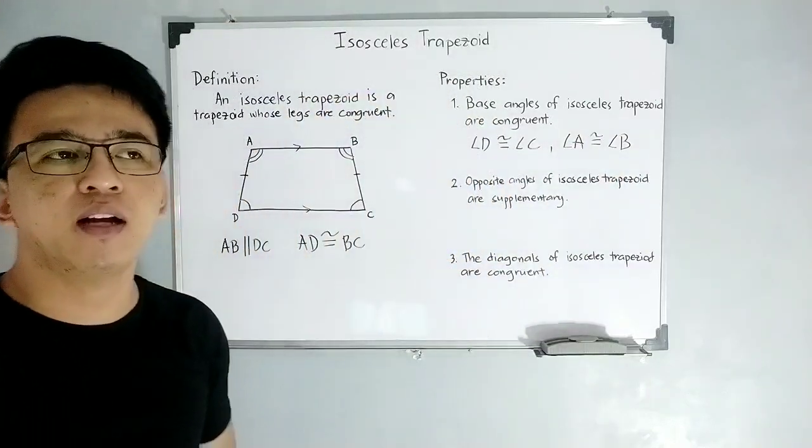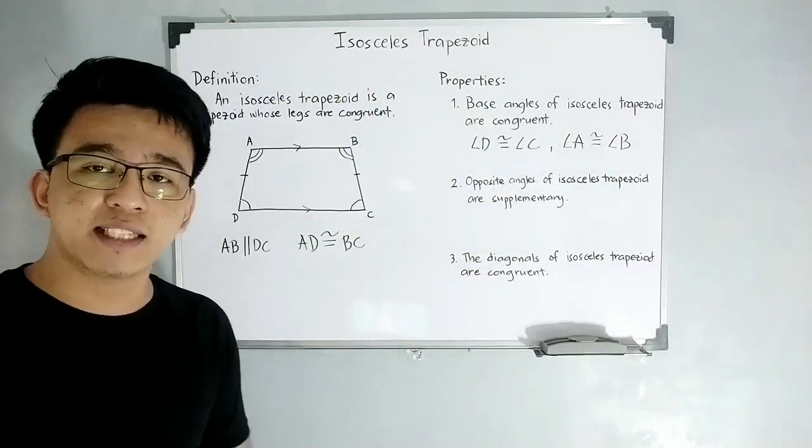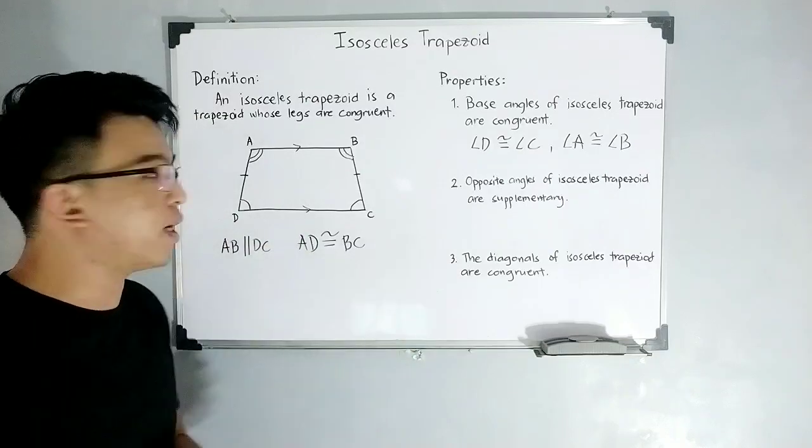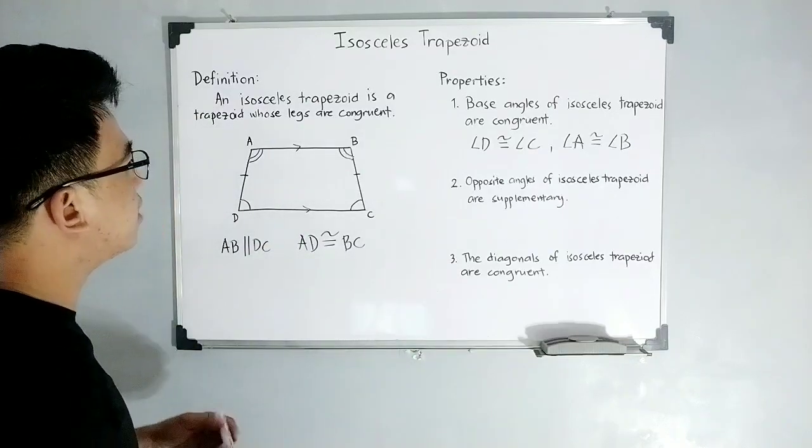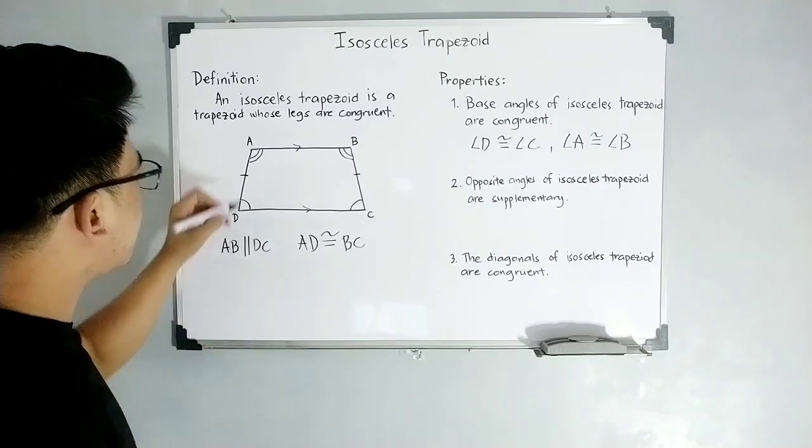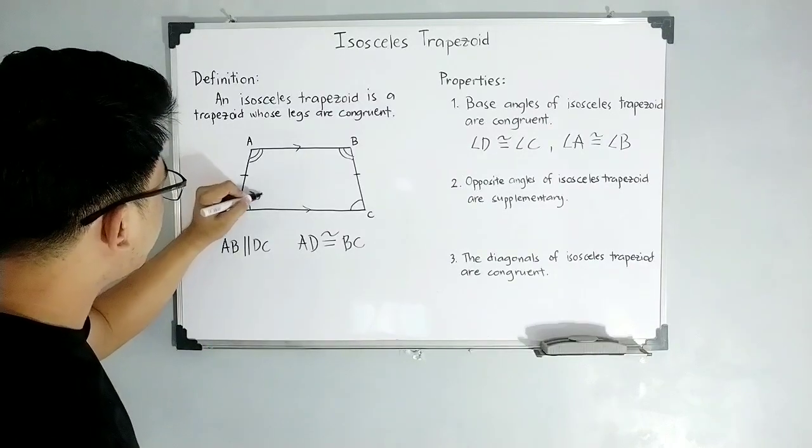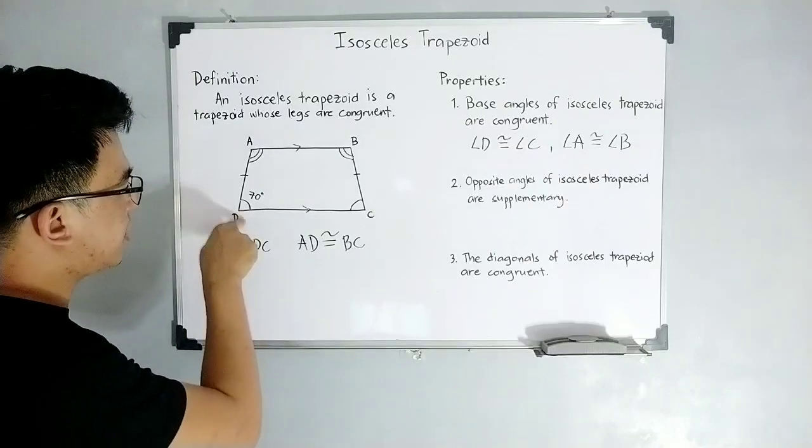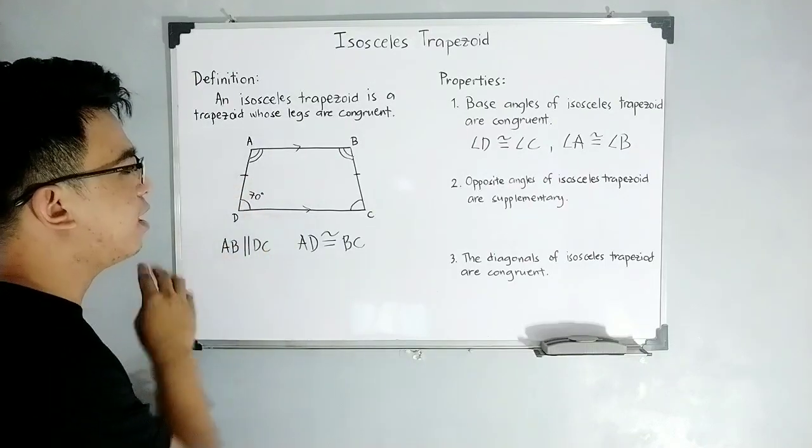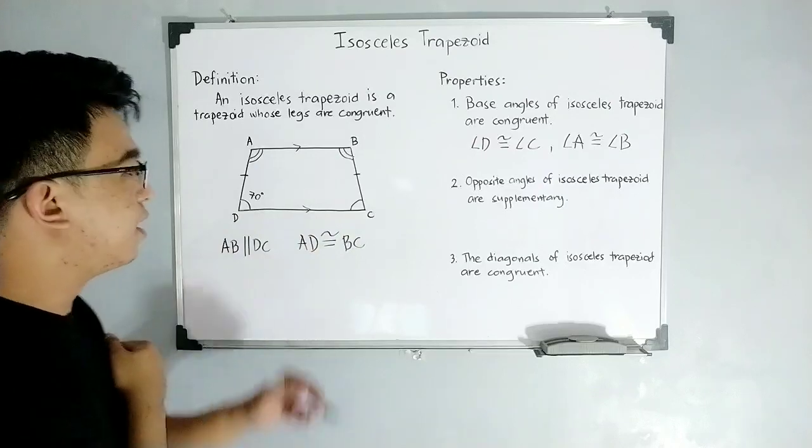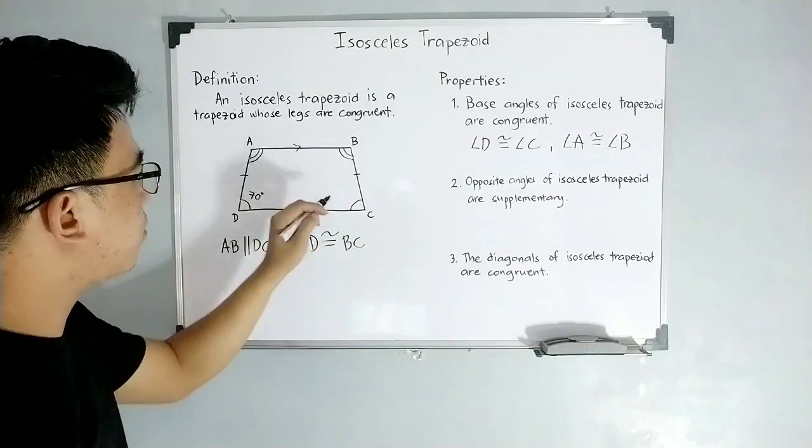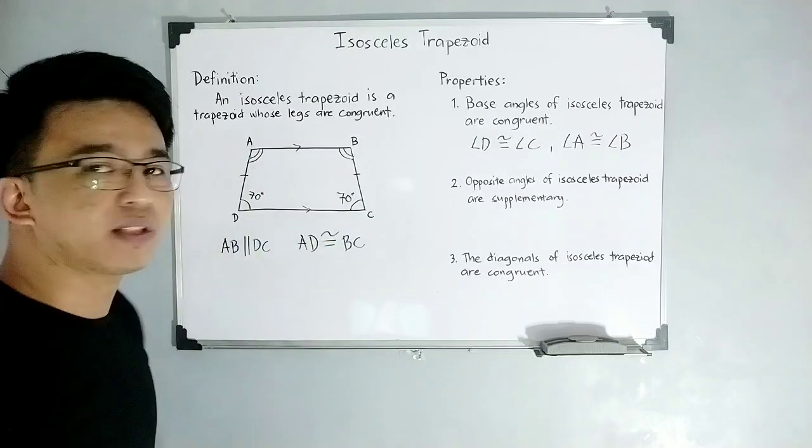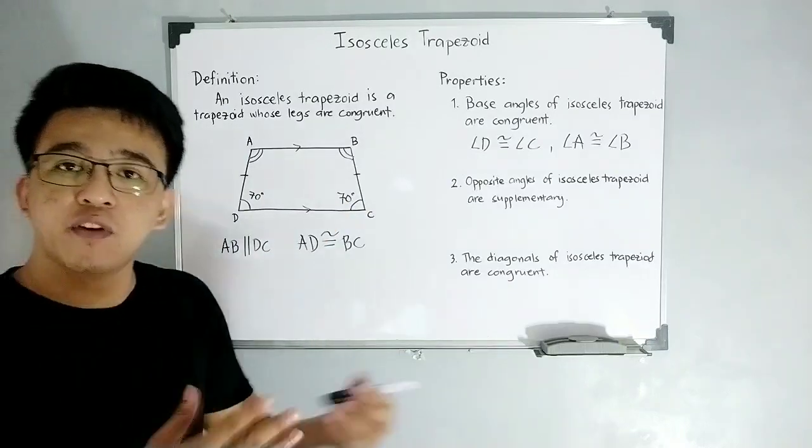Sir, what is the best application or can you please give us an example so we can better realize what is meant by property number one. So what does that mean? Let's say for example, this angle measures 70 degrees. What about the measurement of angle C? We can say that since they are congruent, we can say that this angle also measures 70 degrees. That's it for property number one.